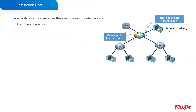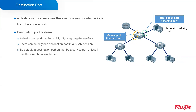About the destination port, it receives the exact copies of data packets from the source port. It could be a layer 2, layer 3, or aggregate interface. There can be only one destination port in a SPAN session. By default, a destination port cannot be a service port unless it has the switch parameter set. This means during the configuration, there is a switch parameter.